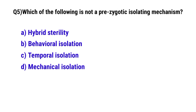Question No. 5: Which of the following is not a pre-zygotic isolation mechanism? The correct option is A: Hybrid sterility.